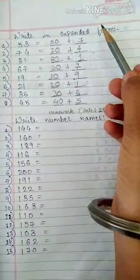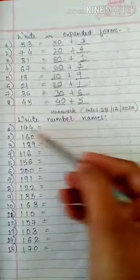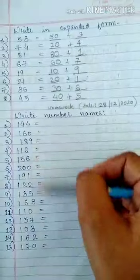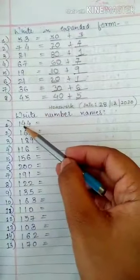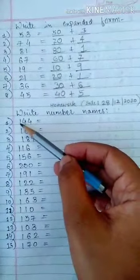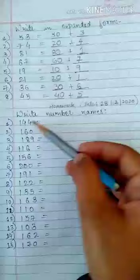Now, your homework is write number names. Here we have 15 questions. You have to write number names. For example, here we have to write number names. 144. 144.